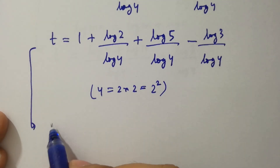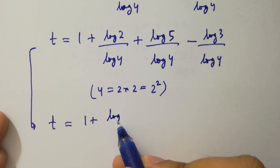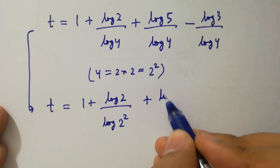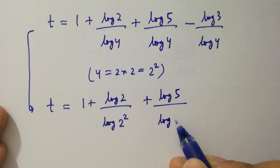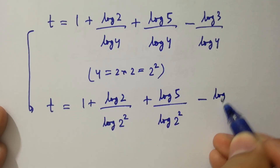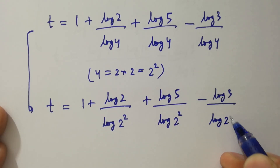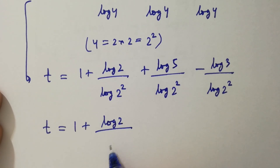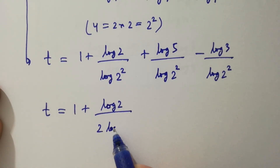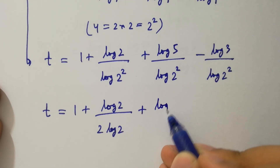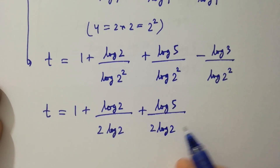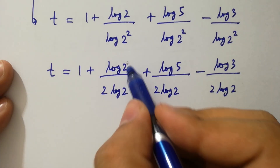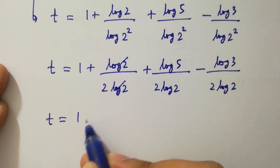Since 4 equals 2 squared, t equals 1 plus log 2 over log 2 squared plus log 5 over log 2 squared minus log 3 over log 2 squared. Since log 2 squared equals 2 log 2, log 2 and log 2 cancel, giving t equal to 1 plus one half.